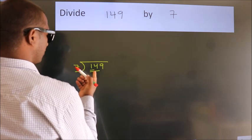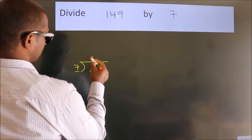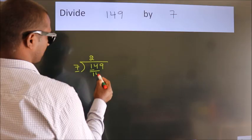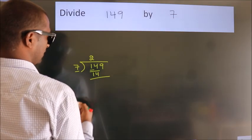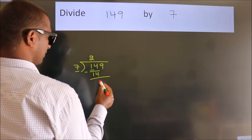When do we get 14? In 7 table. 7 twos, 14. Now we should subtract. We get 0.